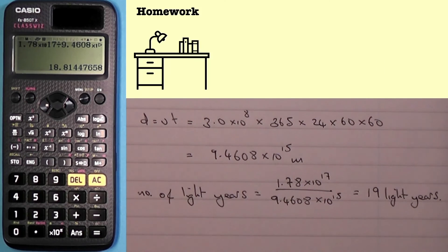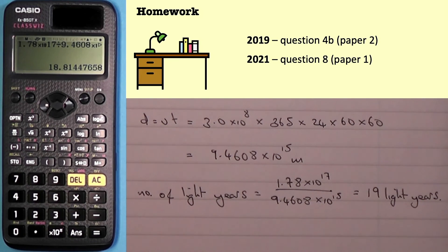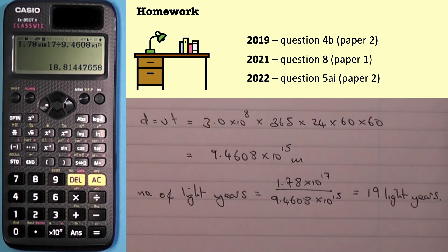Last but not least, I'm going to give you a little bit of homework — attempt some of these questions from past papers on light years, knowing what you now know. First, look at the 2019 paper, paper 2 (the written paper), question 4b. Then from the 2021 paper, paper 1 (the multiple choice section), question number 8. And finally from the 2022 paper, paper 2, question 5a part 1.